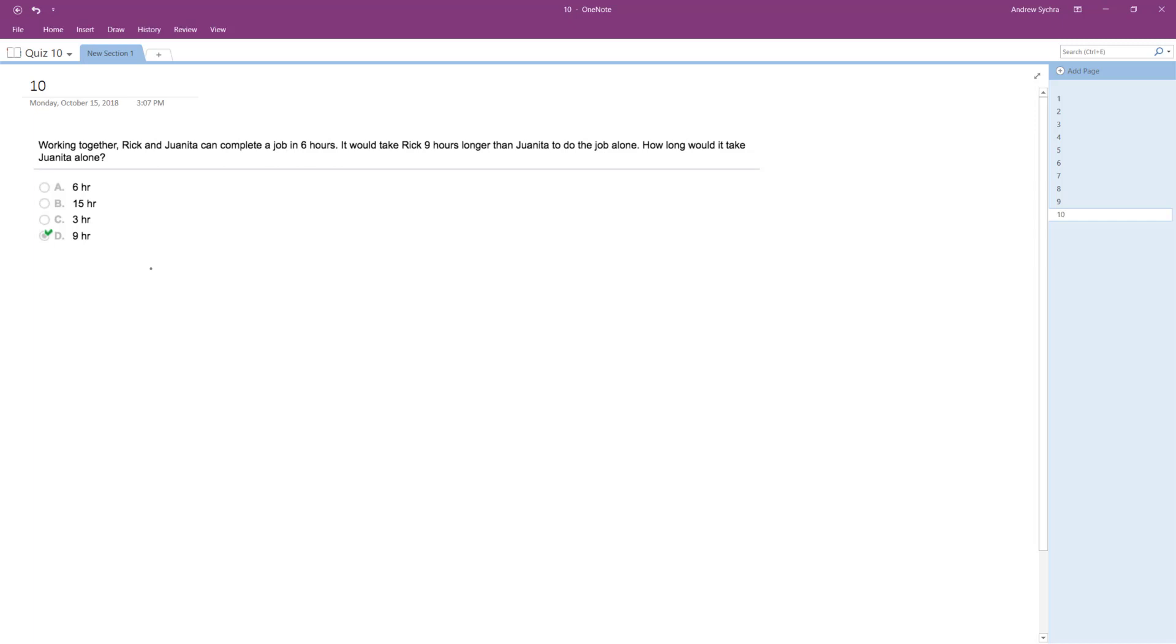So basically you set up the equation like this: one over Rick plus one over Juanita equals one over six hours to complete the job together.